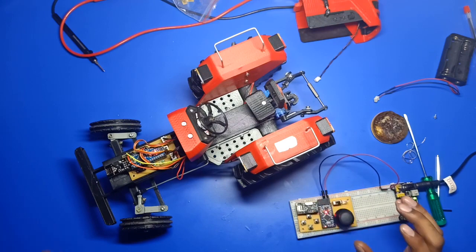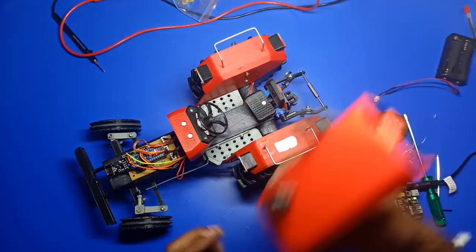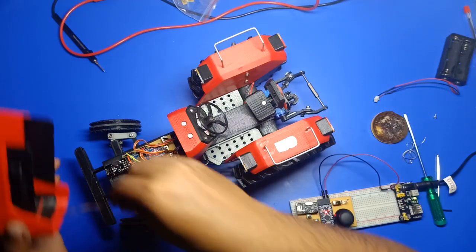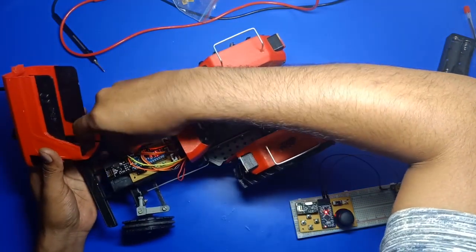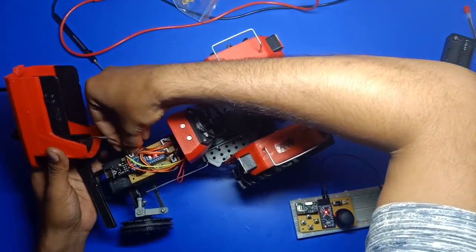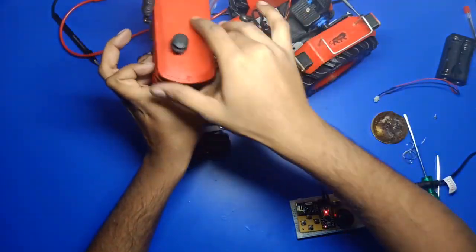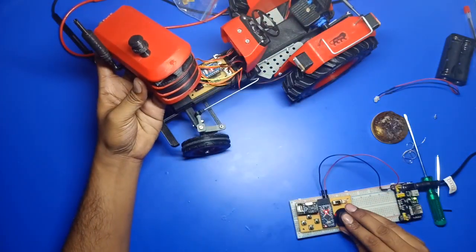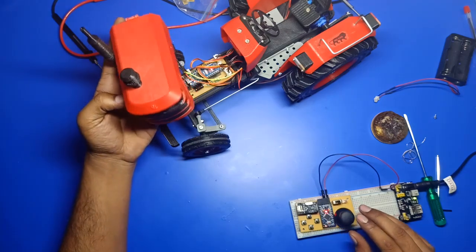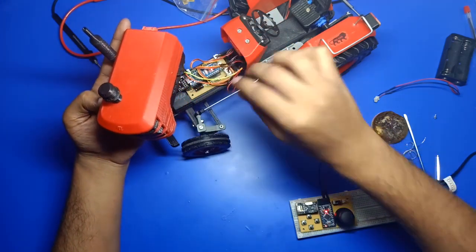Indicator, servo, everything is working. I will connect the front headlight and check the output. Front LED, I am using this center button. So LED is also working.